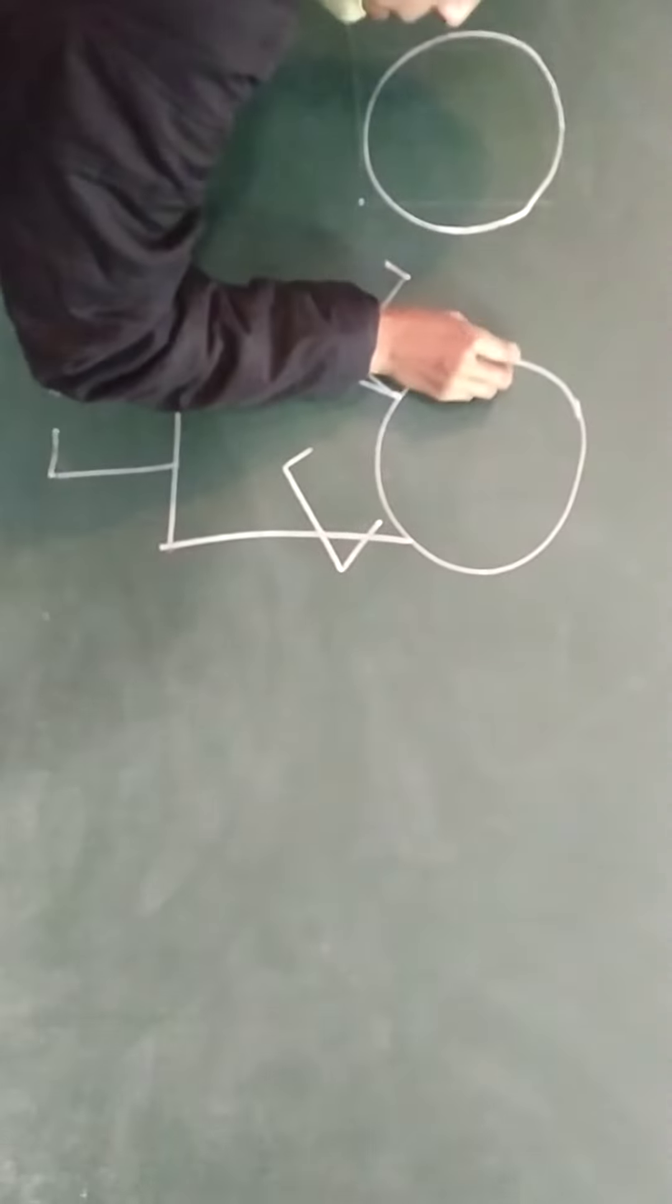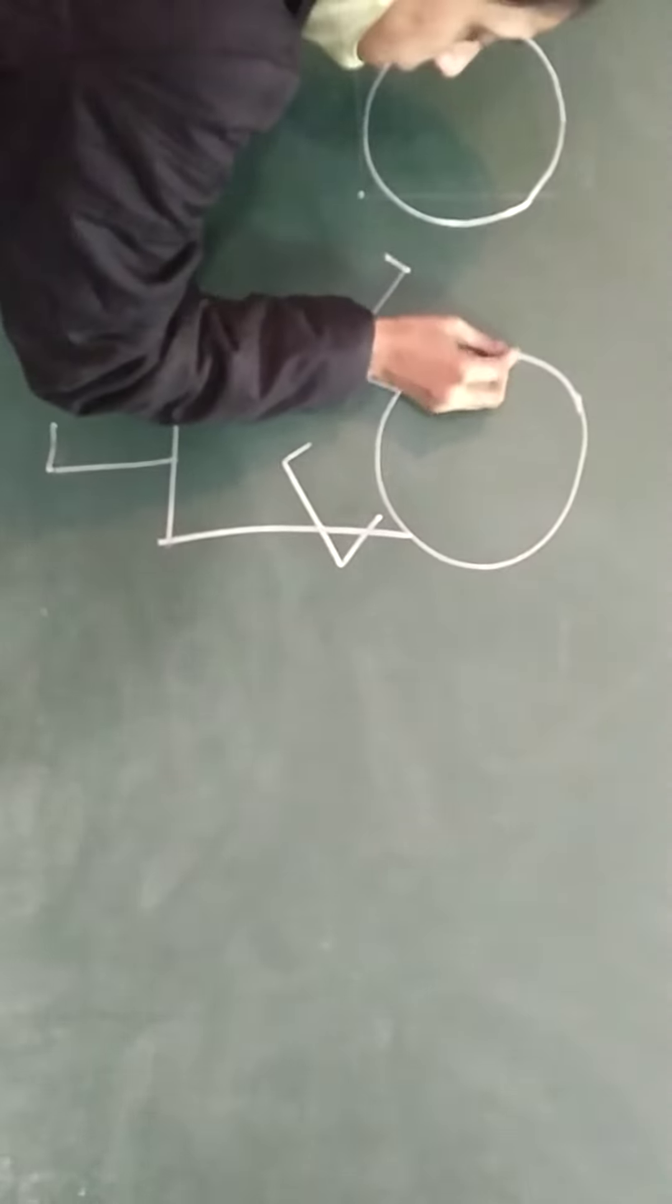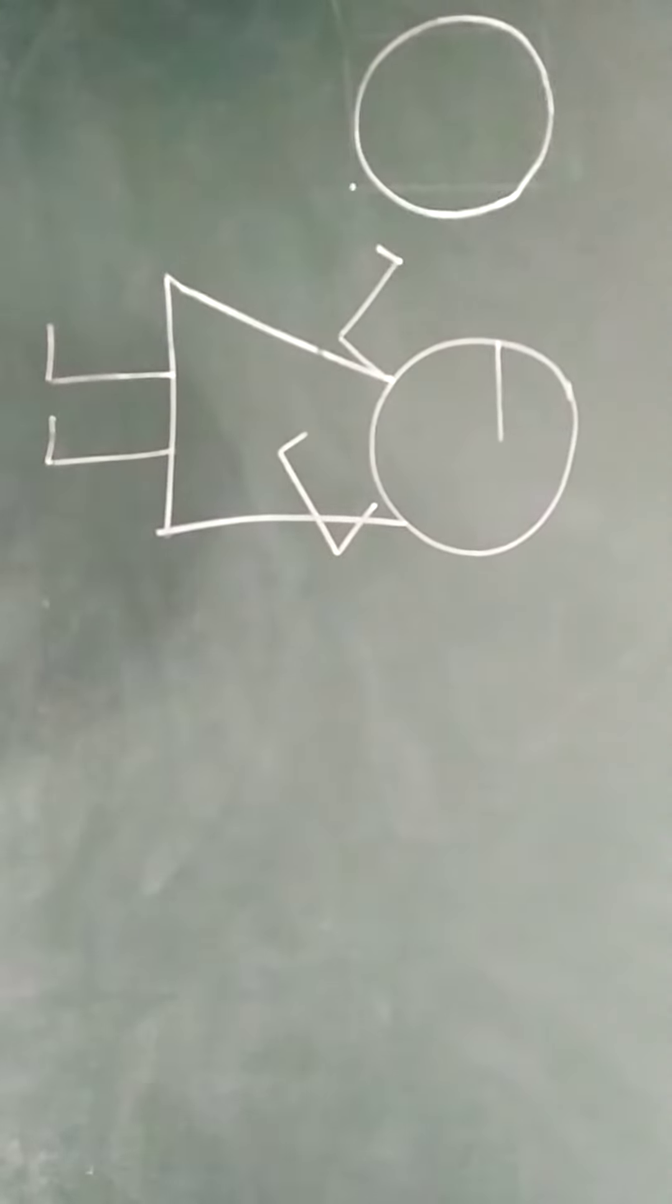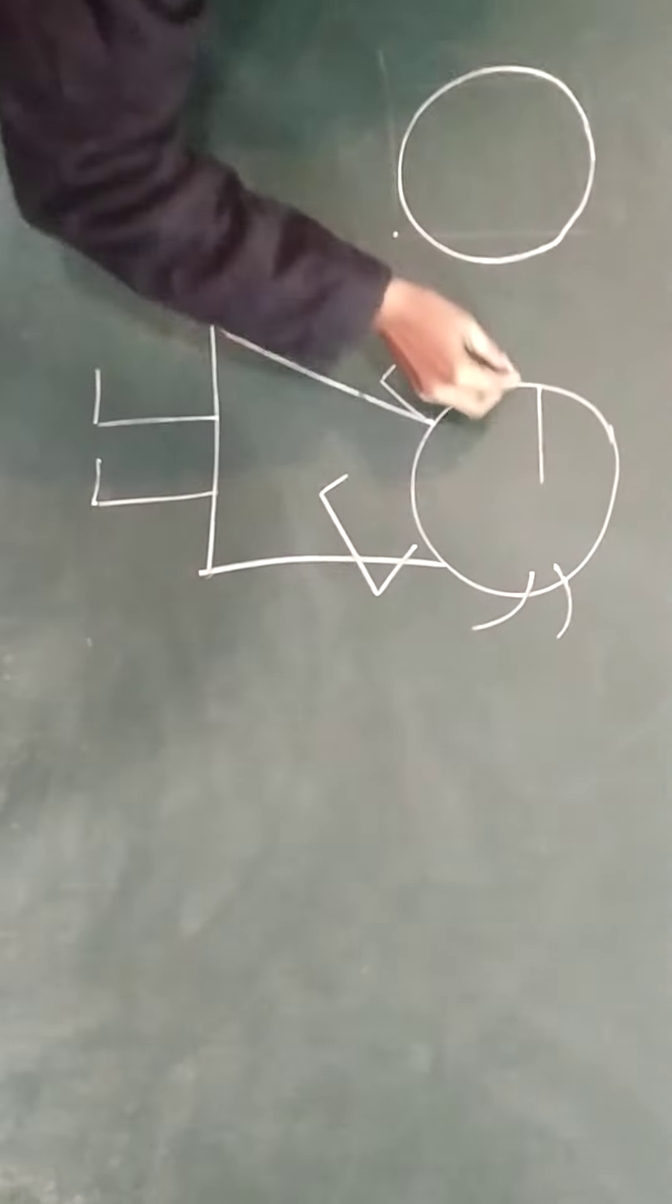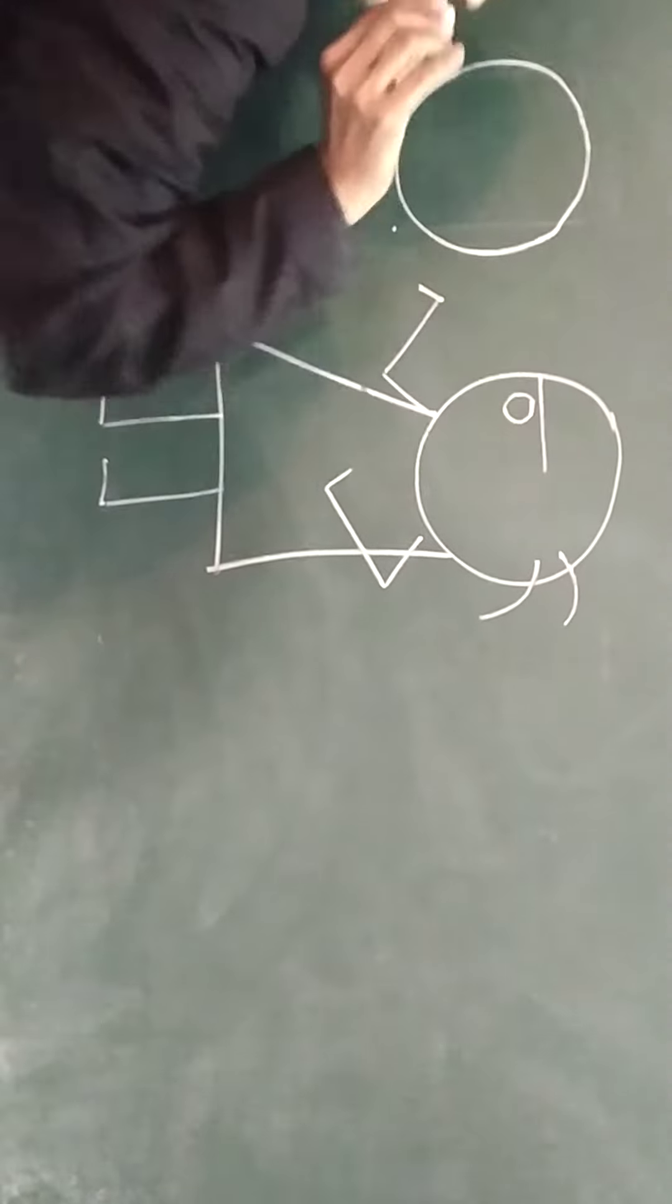Then, for making eyes, first we draw a slanting line. Then, with the help of curves, we make a hair. Again, we make a circle on it to make an eye of the girl.